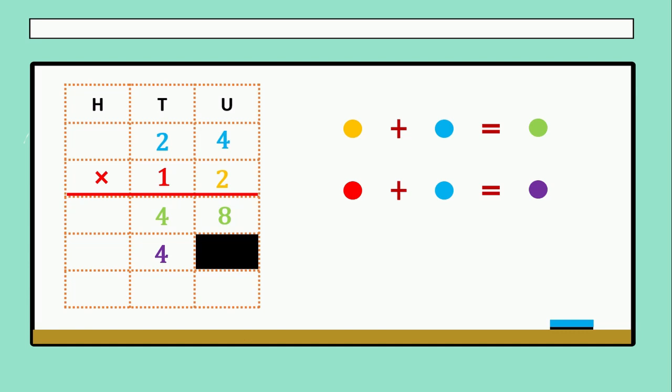Now 1 times 2 that is equals to? Very good! 2. We finish to multiply the units and the 10s.